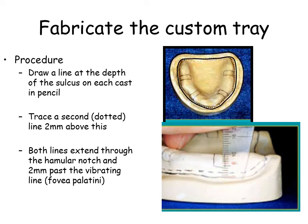Using the maxillary cast, draw a solid line in the depth of the sulcus. Trace a dotted line approximately 2mm above the solid line. Both lines extend through the hamular notch and 2mm beyond the vibrating line as seen in the diagram.